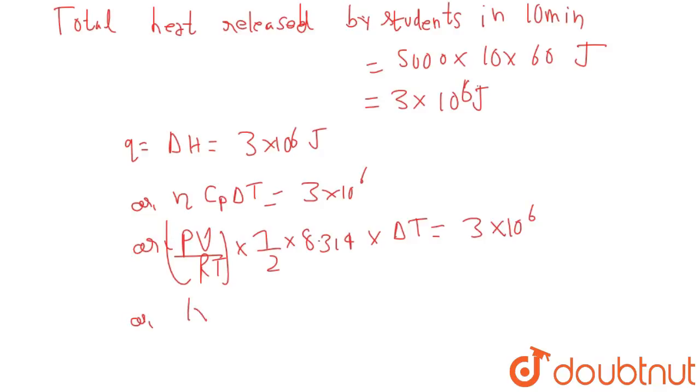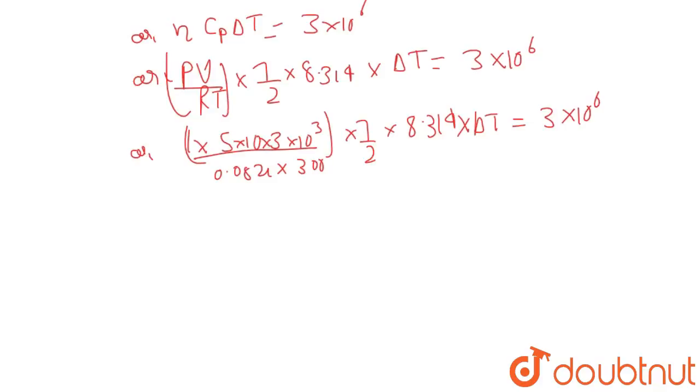Initial pressure is 1 atm, volume is 5 into 10 into 3 meter cube, R is 0.0821, and temperature is 27 degrees Celsius, that is 300 Kelvin, into 7 by 2 into 8.314 into delta T is equal to 3 into 10 raise 6. So if we calculate delta T...